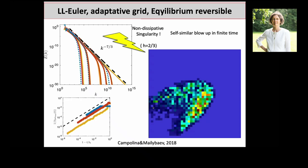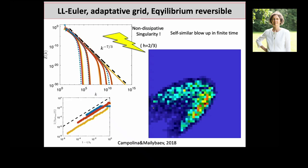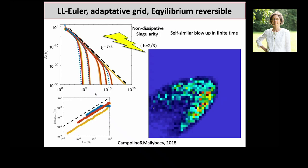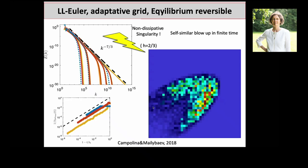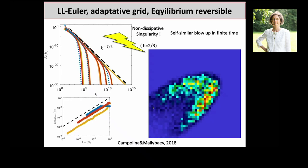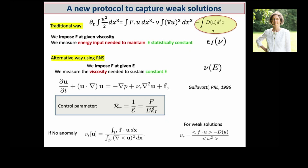On log lattice with Euler there is a singularity with H = 2/3 — a non-dissipative singularity corresponding to a self-similar blow-up in finite time. After blow-up, everybody wonders what happens — whether there is some organized weak solution. The situation is not settled. We thought about another way to reach weak solutions and introduced the reversible Navier-Stokes equation. This equation was first introduced by Gallavotti in 1996 for deriving some equilibrium theorems, but we use it here to understand the physics of singularities, quasi-singularities, and weak solutions.